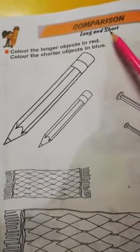Now open your Funmatic book. Page number 38, comparison, long and short.